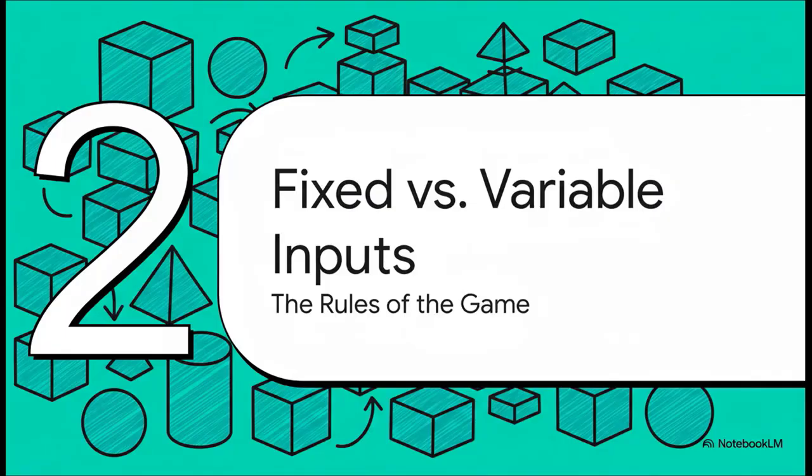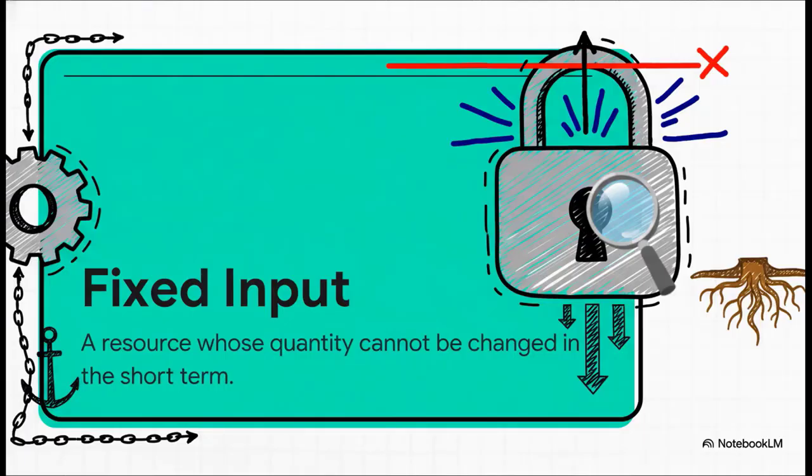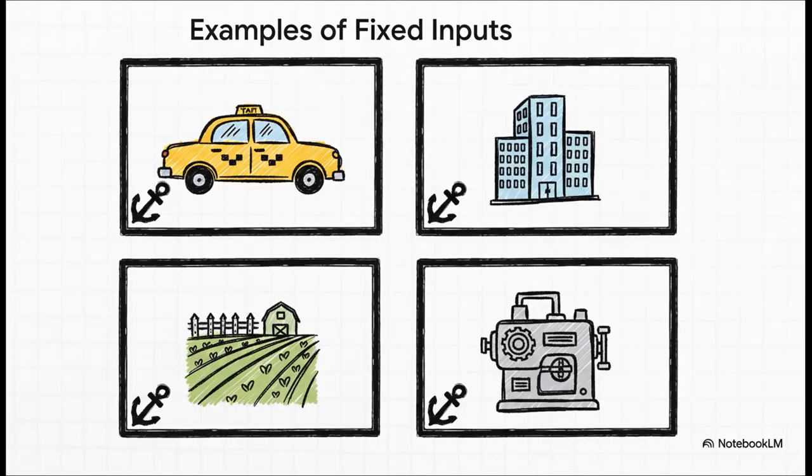Fixed versus variable inputs - these are kind of like the rules of the game. First up is what we call a fixed input. The easiest way to think about this is it's the box your business operates in. It's the part of your operation that is for now totally locked in. You can't just snap your fingers and get more of it. So in our taxi example, the fixed input is the car. You've only got one. If you're running a farm, it's your plot of land. Or maybe you've got an office space on a five-year lease. The point is, these are the things that at least in the short run, you're stuck with.